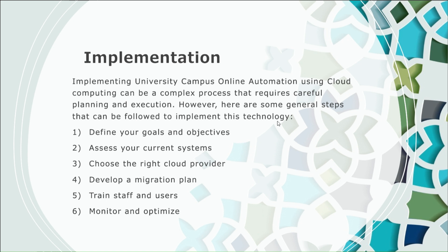The fourth point is to develop a migration plan. Develop a detailed plan for migrating your current system to the cloud. This should include timelines, resource allocation, testing procedures, and contingency plans in case of issues. The fifth point is to train staff and users. Provide training for staff and users on how to use the new system effectively. This will help ensure a smooth transition and maximize the benefits of automation.